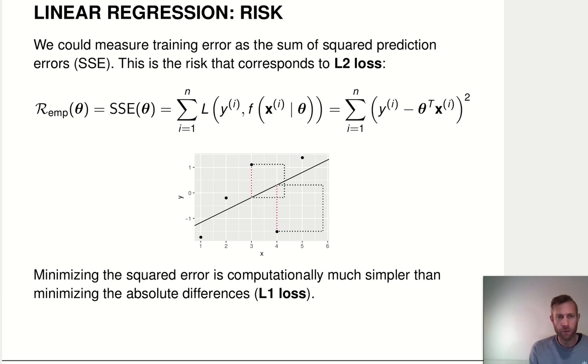Well, our empirical risk here for squared error loss—that's the one we're looking at now—we're using squared error loss or L2 loss. Our empirical risk is just the sum of squared errors or the mean of squared errors; it doesn't really matter whether you take the mean or the sum here.